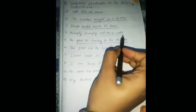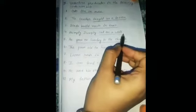Number 4. Humpty Dumpty sat on a wall. Humpty Dumpty is the subject. Sat on a wall is the predicate. So, underline the predicate.